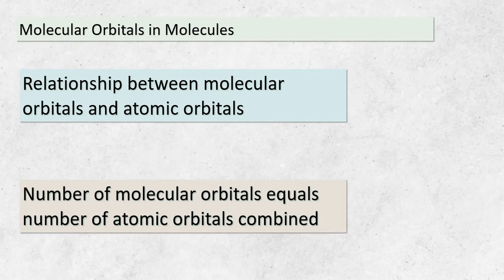Now that we've delved into energy production, let's shift our focus to molecular orbitals. Have you ever wondered how atoms come together to form molecules with unique properties? It all begins with atomic orbitals. When these orbitals combine, they give rise to molecular orbitals. Here's an interesting rule: the number of molecular orbitals formed is equal to the number of atomic orbitals that joined forces. Imagine atoms as puzzle pieces, fitting together to create entirely new structures. This concept helps us understand the complex nature of molecular interactions.